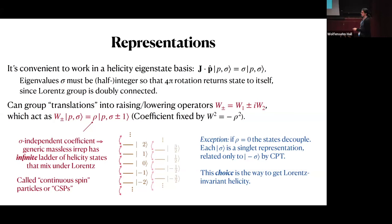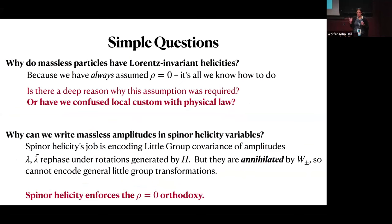There's one exception to the general rule of non-Lorentz-invariant helicity: we can choose ρ = 0, in which case W₊ and W₋ annihilate the helicity state rather than mixing it into higher or lower helicities. In that case we get our singlet representations with Lorentz-invariant helicity, and only CPT mixes helicity +h with −h. That is the choice that gives Lorentz-invariant helicity, and we've always assumed it because it's the only thing we knew how to do and the only thing we've needed so far to describe nature. But it's not really clear whether this is a deep assumption needed for consistent theories, or — to appropriate David Nirenberg's wording from yesterday — whether we've confused local custom of the community with a physical law.